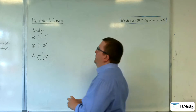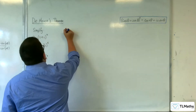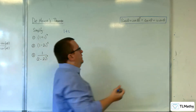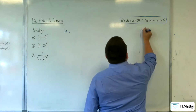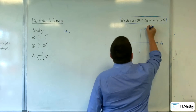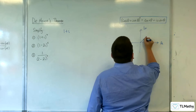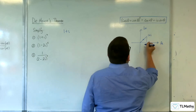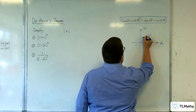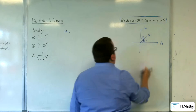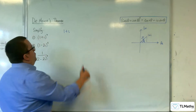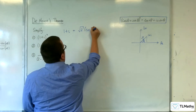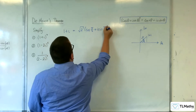Number one: (1+i)^4. The first thing you want to do is write 1+i in modulus-argument form. Drawing a sketch, it has a length of √2 and an angle of π/4. So we can write 1+i as √2 × (cos(π/4) + i·sin(π/4)).